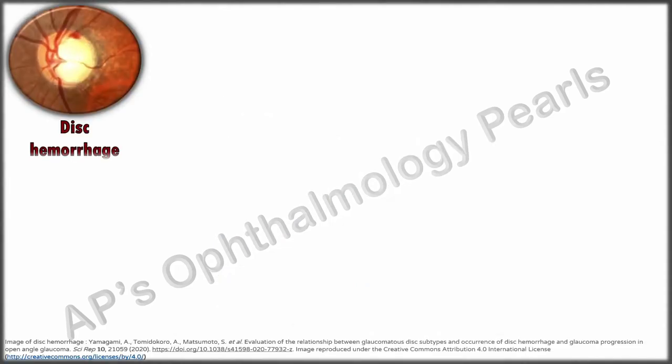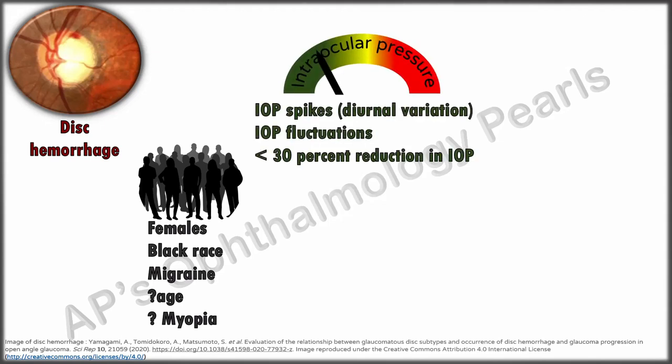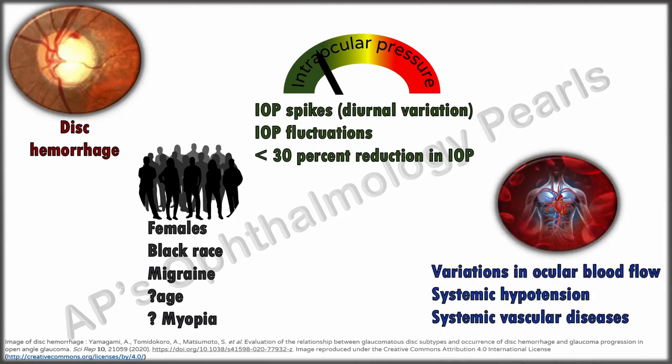In normal tension glaucoma, disc hemorrhage at the time of diagnosis is a very important sign. Female gender, race, and migraine are also significant indicators for progression. Age and myopia are controversial. IOP-related factors include IOP fluctuations, IOP spikes at times other than during consultation, and less than a 30% reduction in IOP. IOP spikes can be picked up by the diurnal variation test, which if positive may indicate primary open-angle glaucoma rather than normal tension glaucoma. Vascular factors are also believed to play a role.